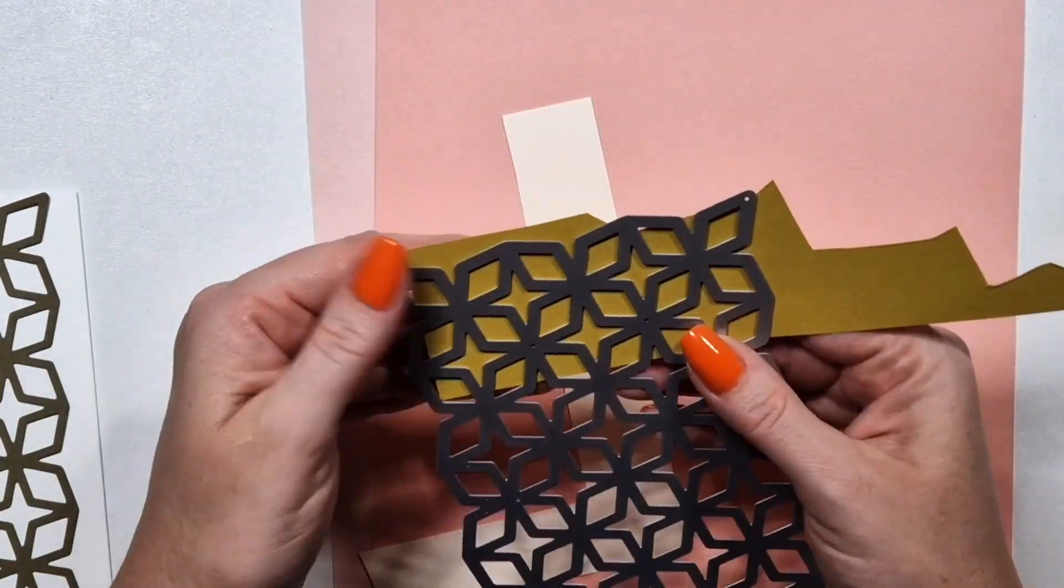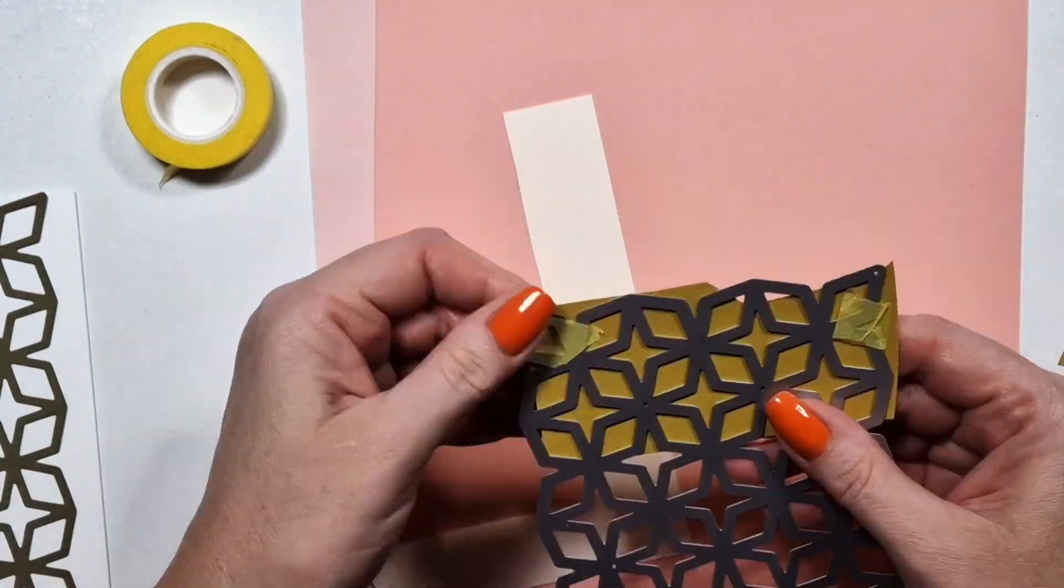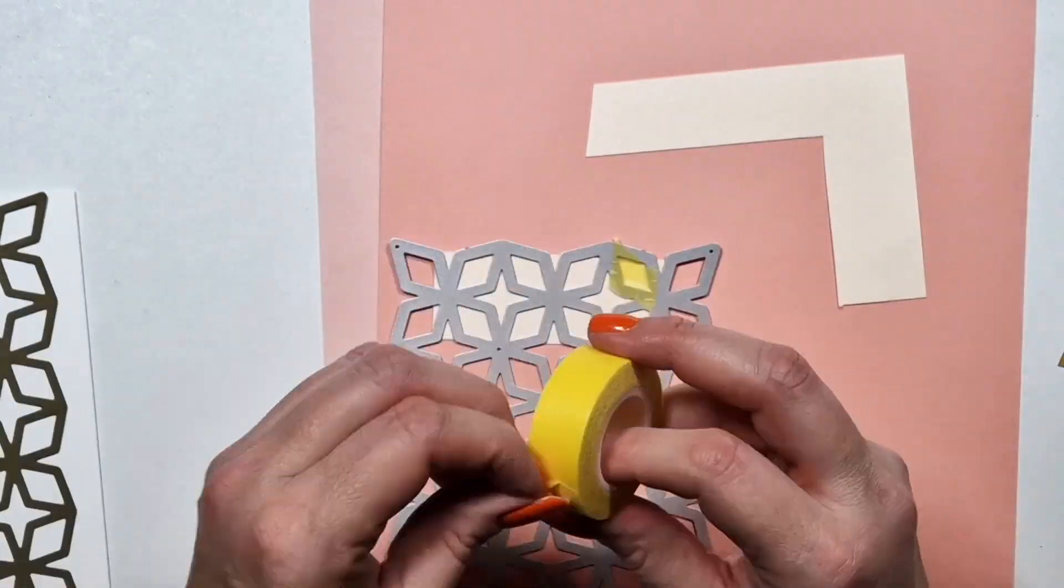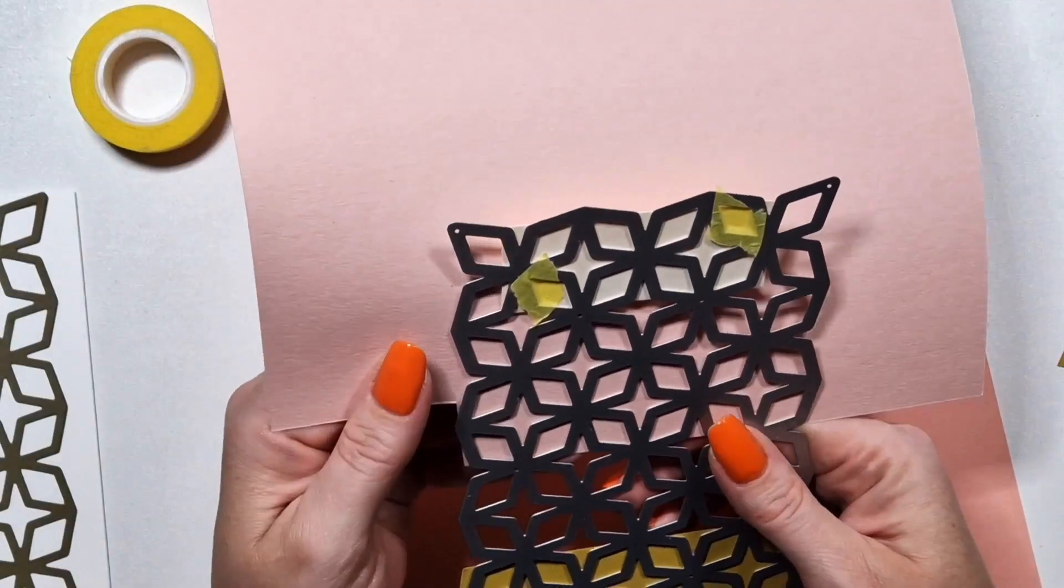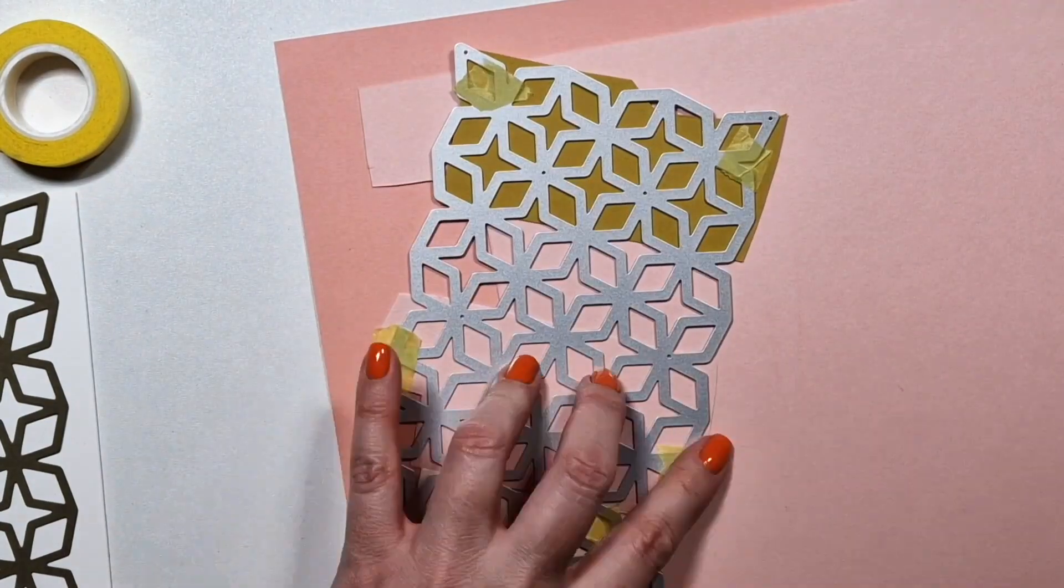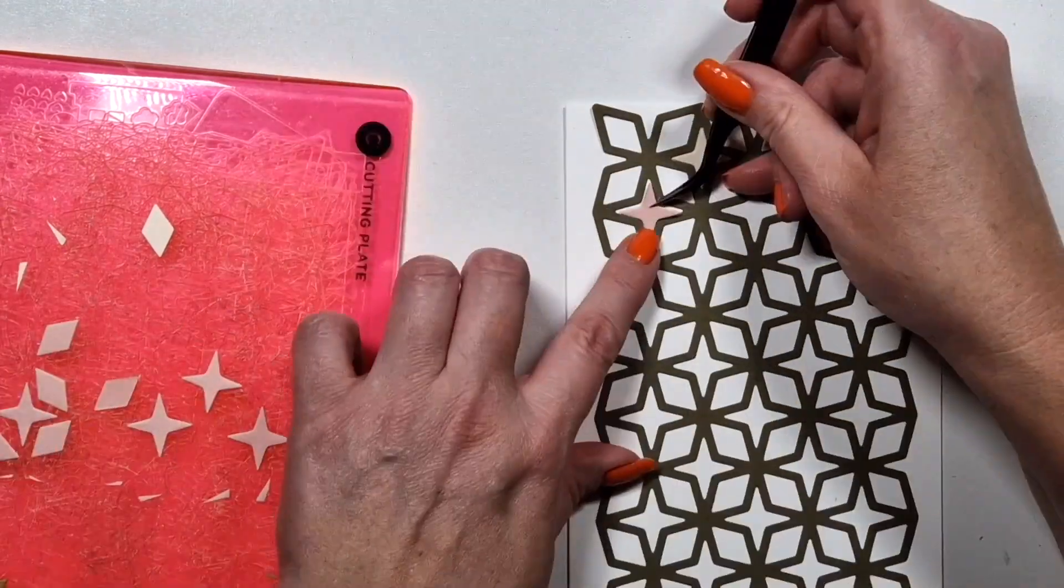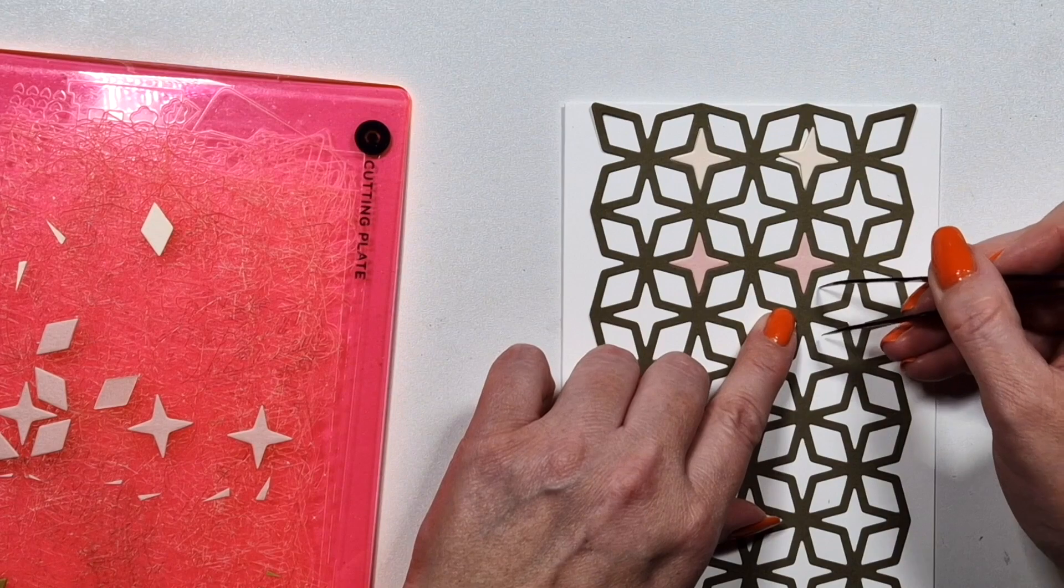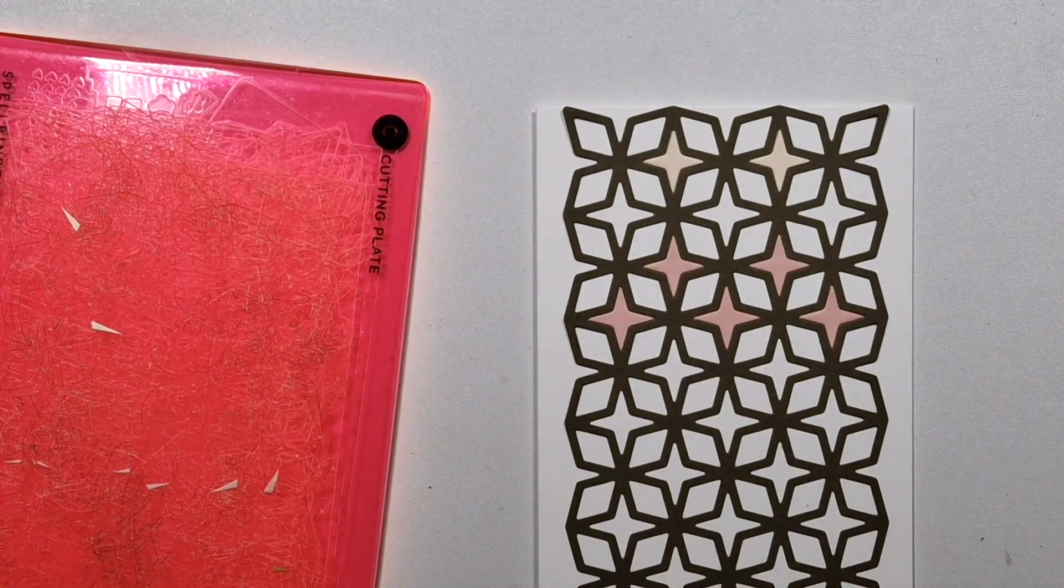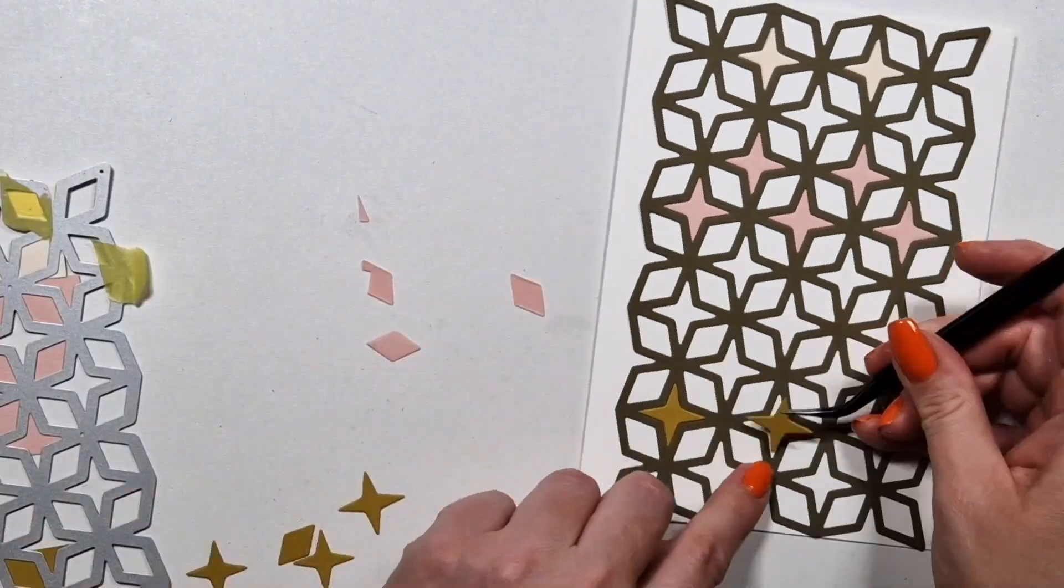On this one I am going to use one of the backgrounds. I'm going to focus on the stars and I'm going to die cut them from all the colors that I have here. So the ivory color, then the two different pinks and then the greens. And then I'm just going to create some pattern with them. Actually, I did not want to throw away that dark green background. I use the other shapes from the green background.